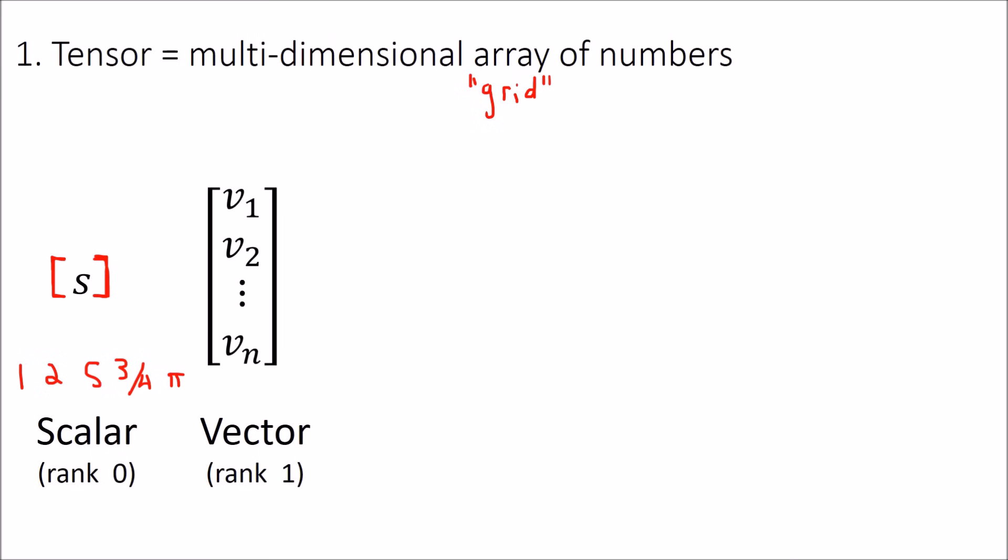Another example of a tensor you've hopefully seen before is a vector, or a rank 1 tensor. We call it a rank 1 tensor because it's a list of numbers that extends downward in one dimension. So it's like a one dimensional array.